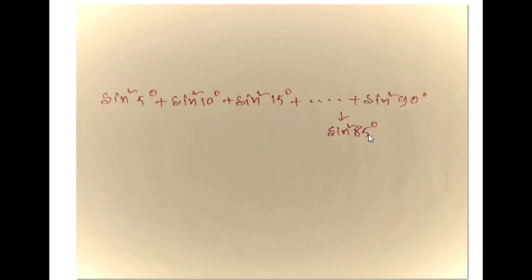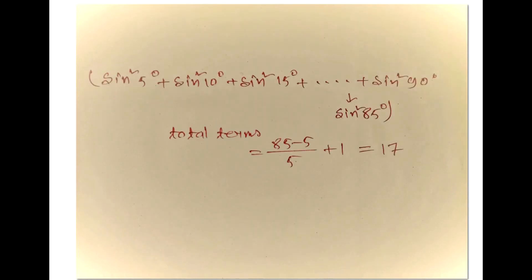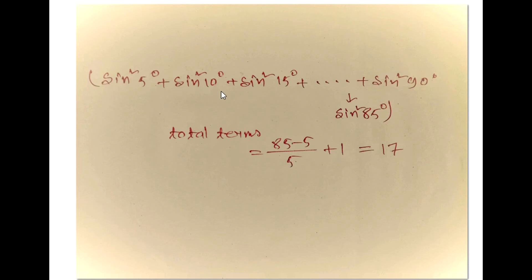So the rule is applicable in this region, in this bracket. The total terms in this bracket is: last term 85 minus first term 5 divided by difference. The difference is 5, plus 1, which is 17.